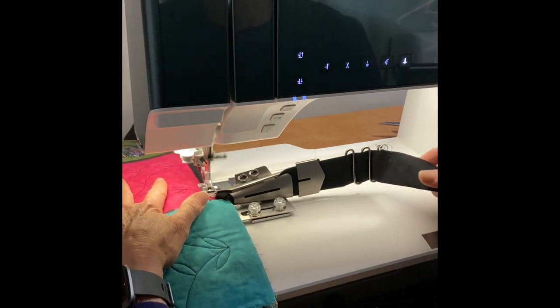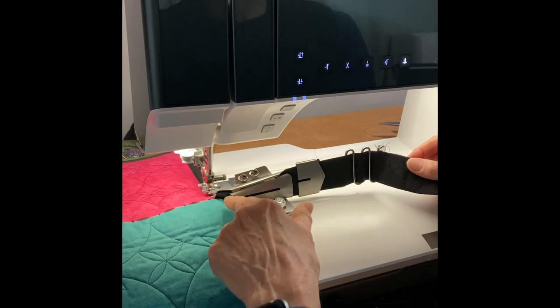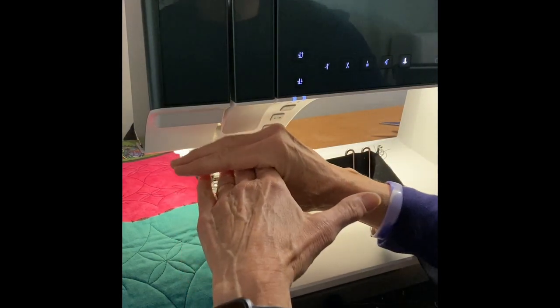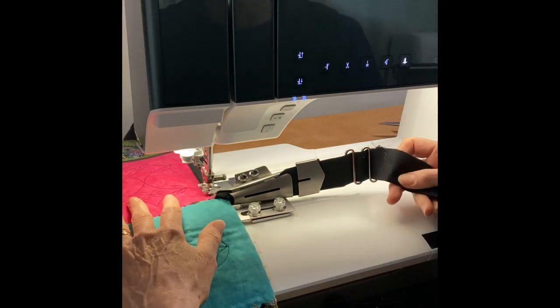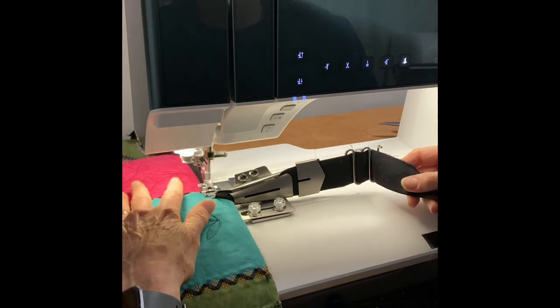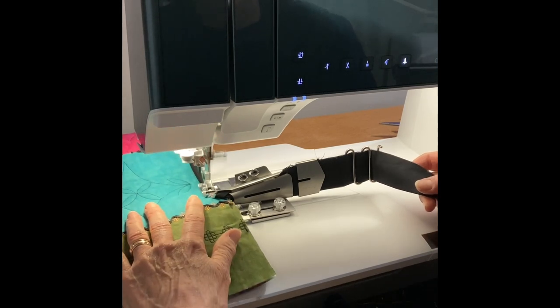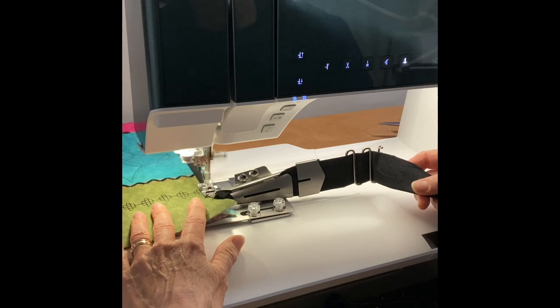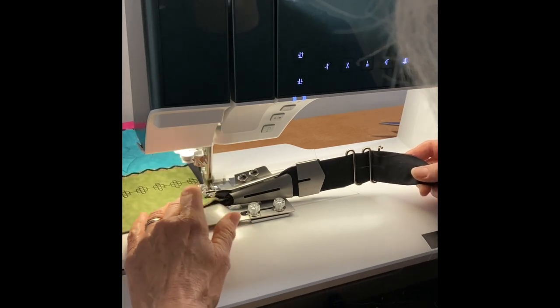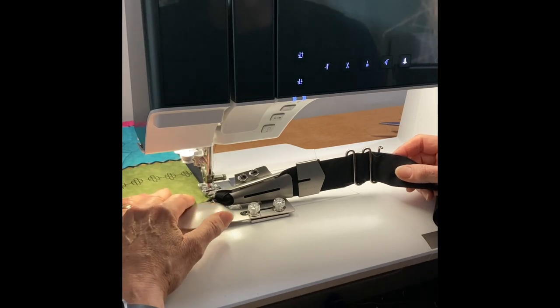As I'm sewing, I'm just eyeballing periodically to make sure that the beans are in the taco and that this tail of the binding fabric is not getting turned around on itself. Then I'm going to go all the way to the edge of the quilt sandwich.